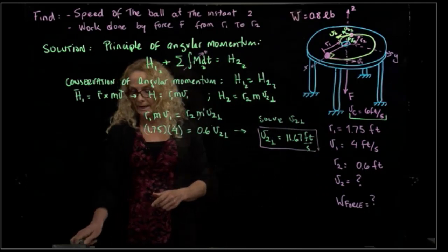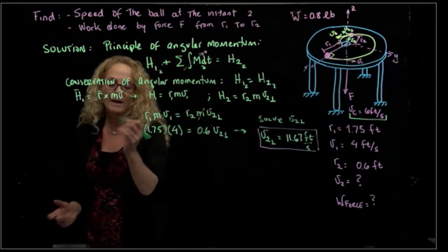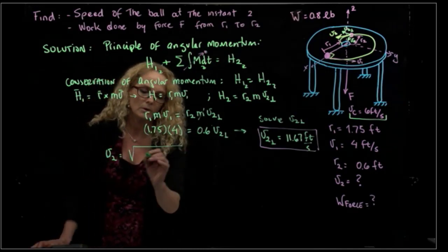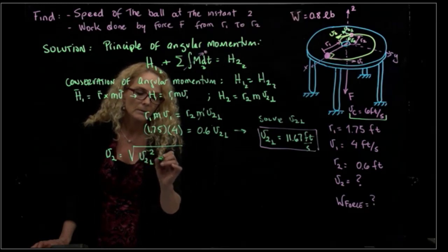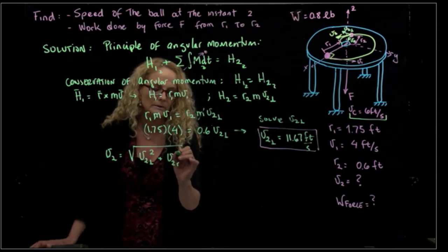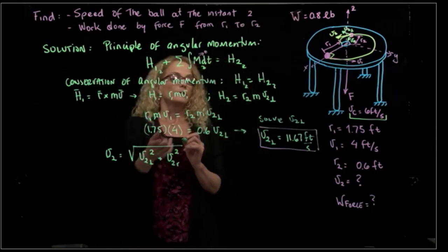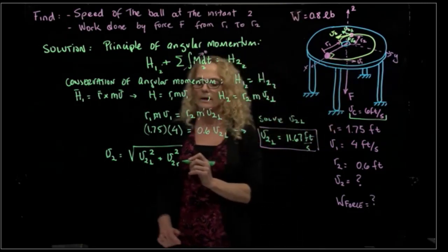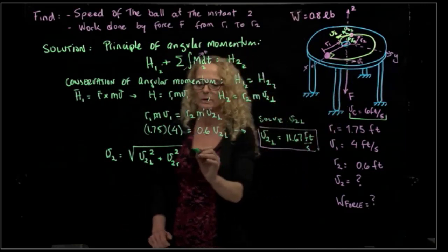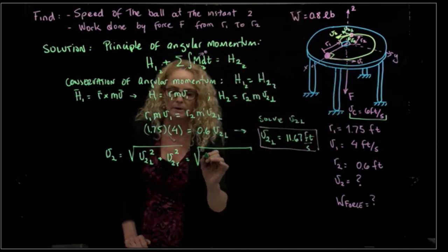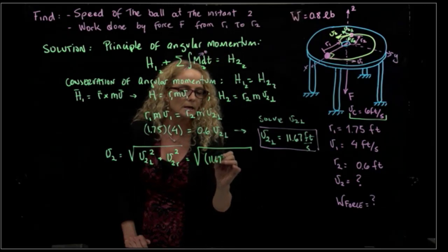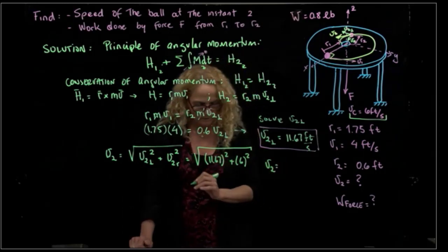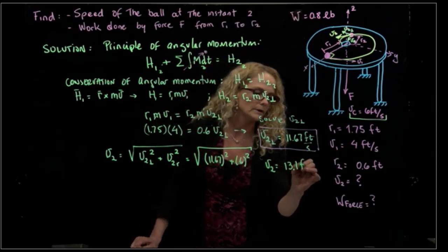To get the total velocity — the magnitude of V2 — we take the square root of the perpendicular component squared plus the radial component squared. The radial velocity is 6 feet per second, produced by the force pulling the cord. So V2 equals the square root of 11.67 squared plus 6 squared, giving V2 equals 13.1 feet per second.